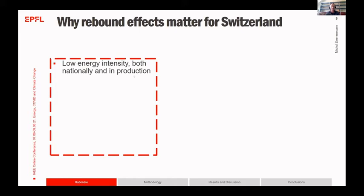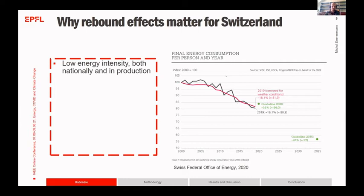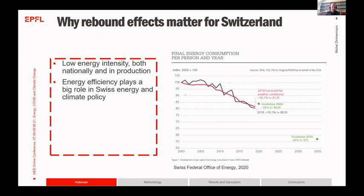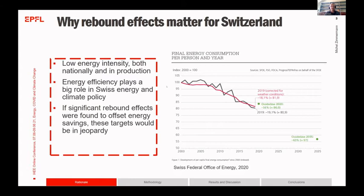Why should this matter for Switzerland? Switzerland already has a pretty low energy intensity compared to the European average, both nationally and in production. But as you can see on the right-hand side, which shows final energy consumption per person per year with 2000 at 100 percent, we still need quite substantial reductions in energy use by 2035, and energy efficiency plays a big role. If significant rebound effects were found to offset many energy savings, these targets would be in serious jeopardy.